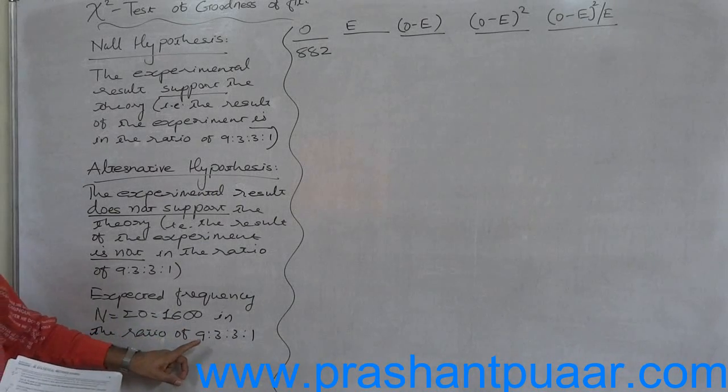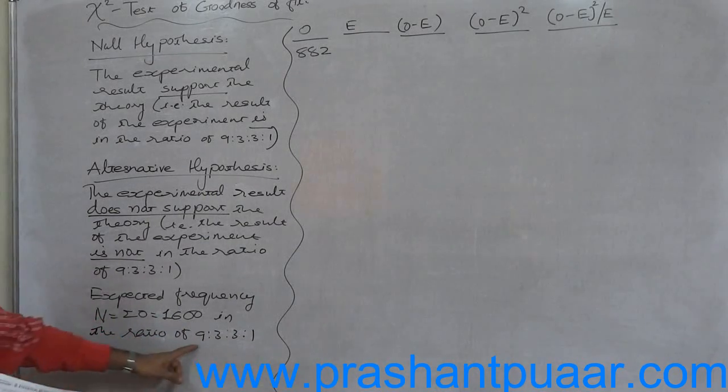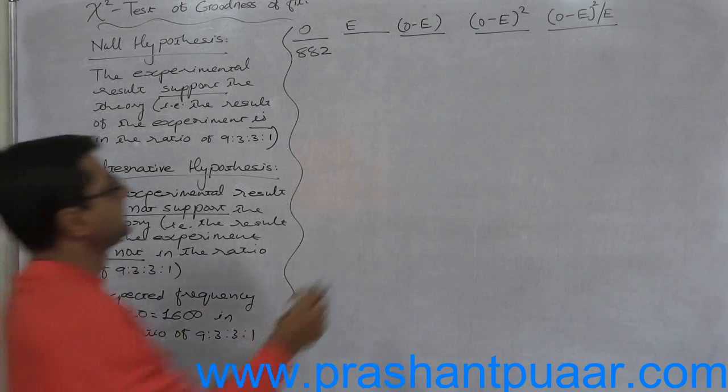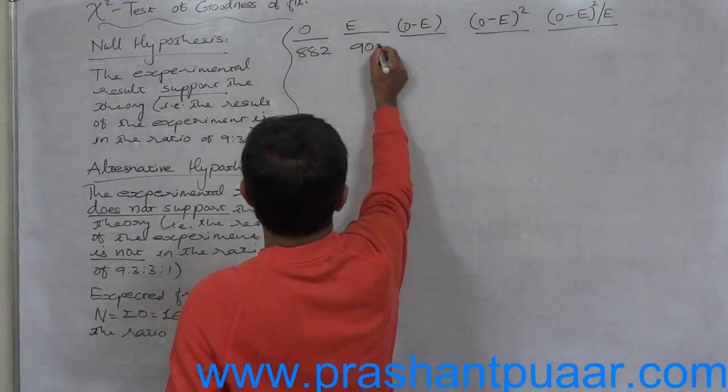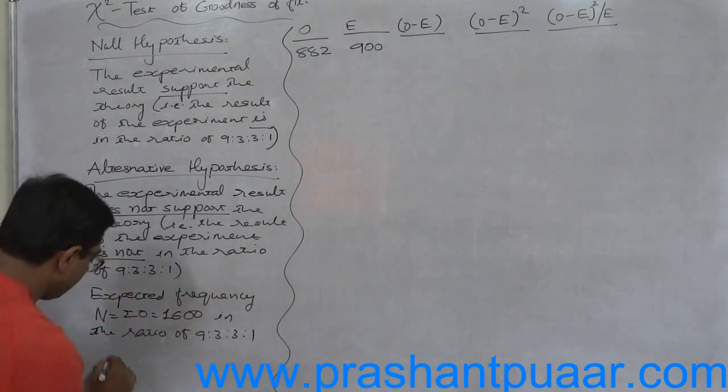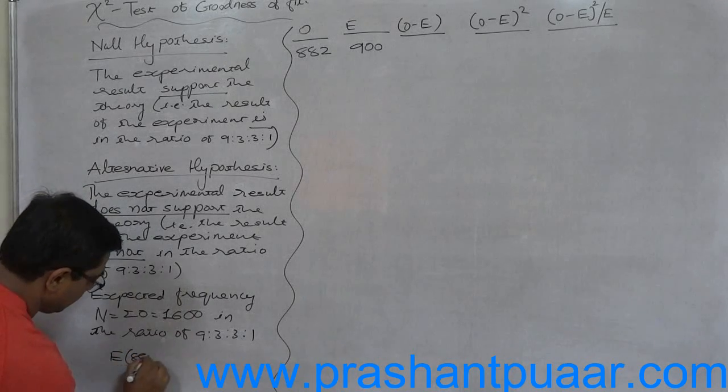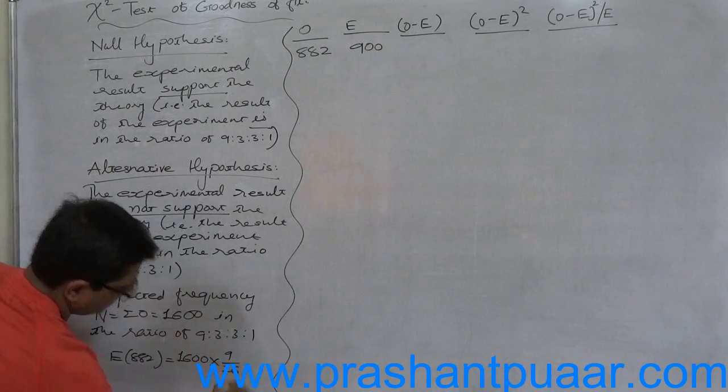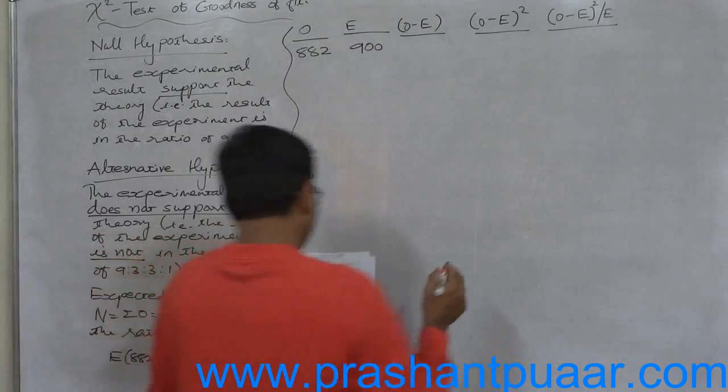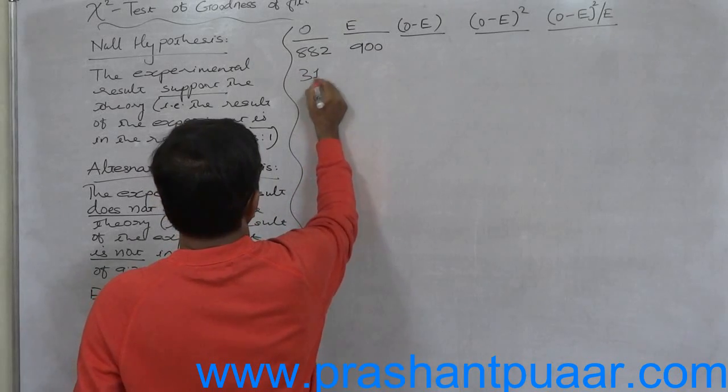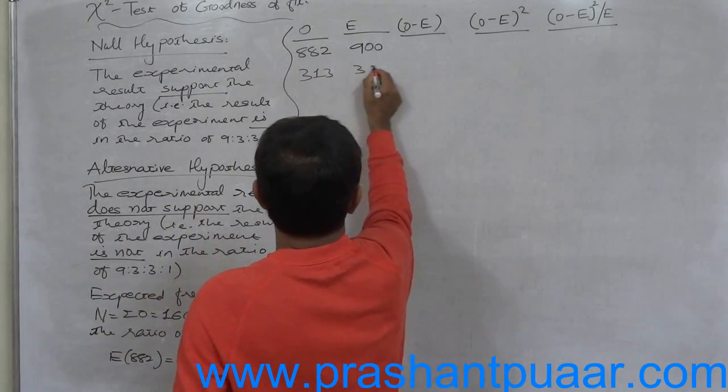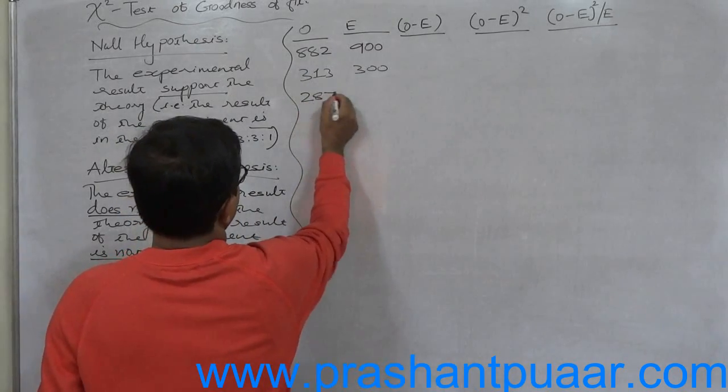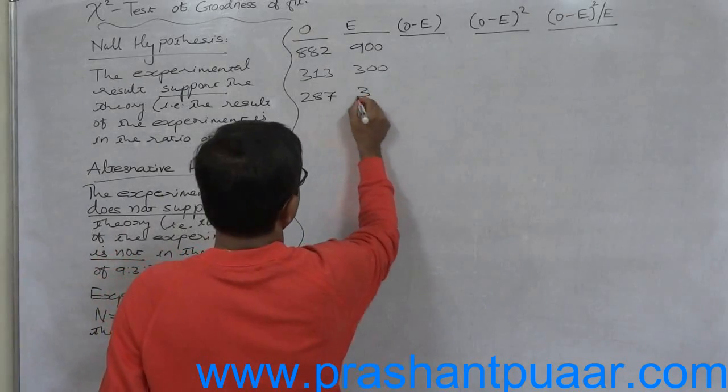The expected frequency: 1600 into 9 by 16, so it will be 900. The second observed frequency is 313, it will be 300. In the same way, the expected frequency for 287 is again 300 (1600 into 3 by 16), and the last is 118, it will be 100.